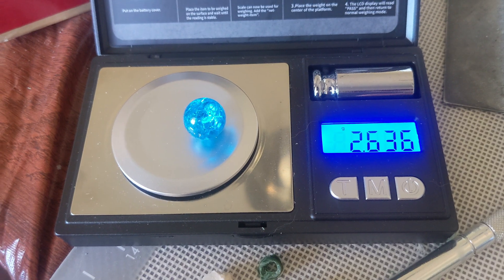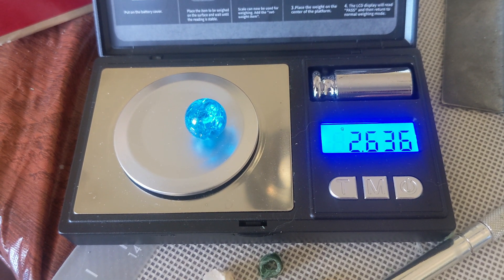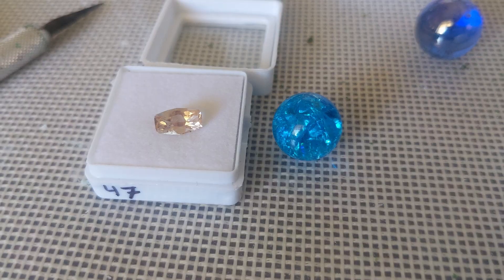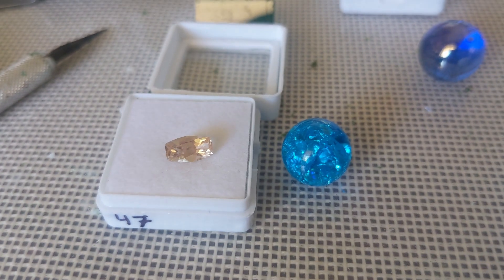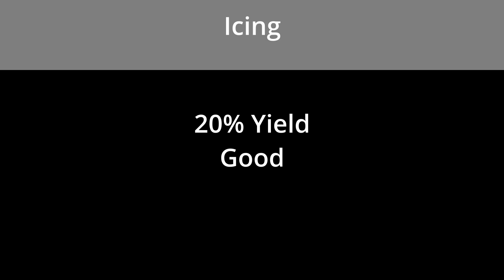When we buy a rough gem, we pay for the whole thing, not merely what we get out of it. A 20-carat rough sapphire that cuts a 1-carat stone was maybe not a good deal. There's a general rule of thumb that 20% yield is good, and anything above that is icing on the cake.